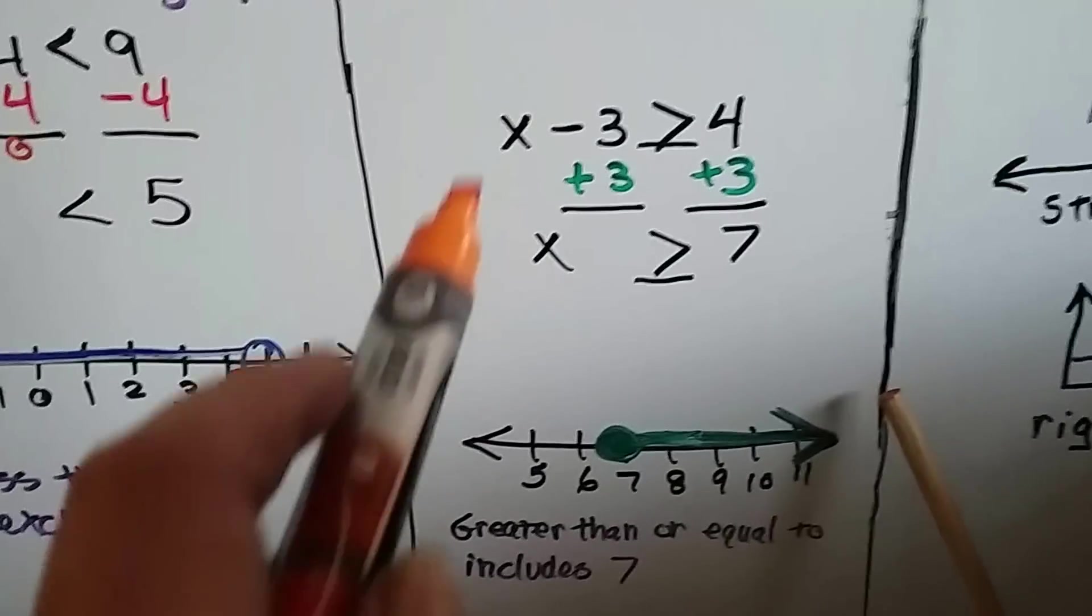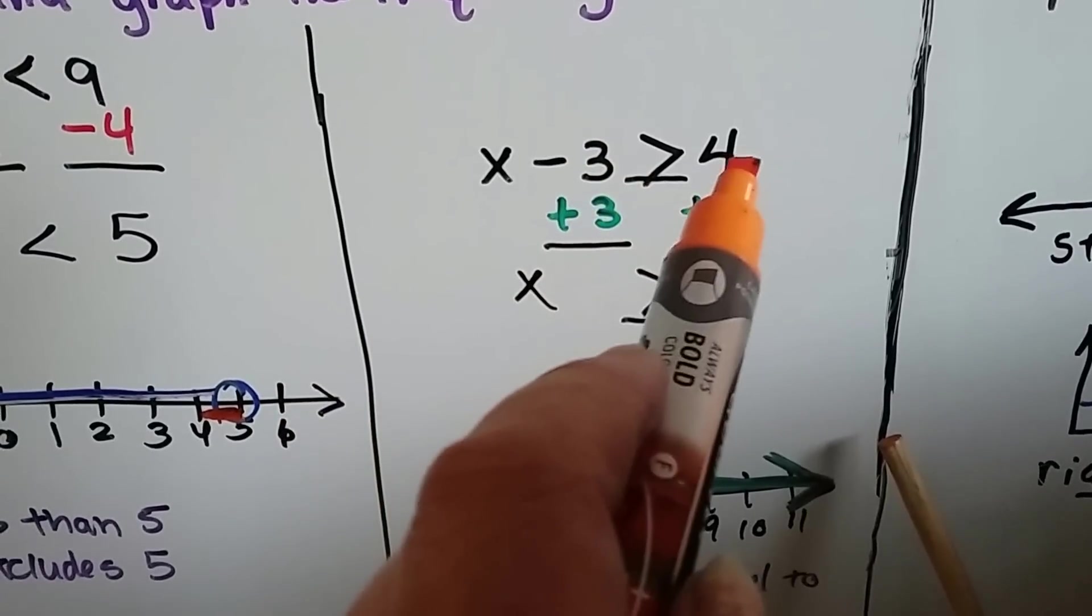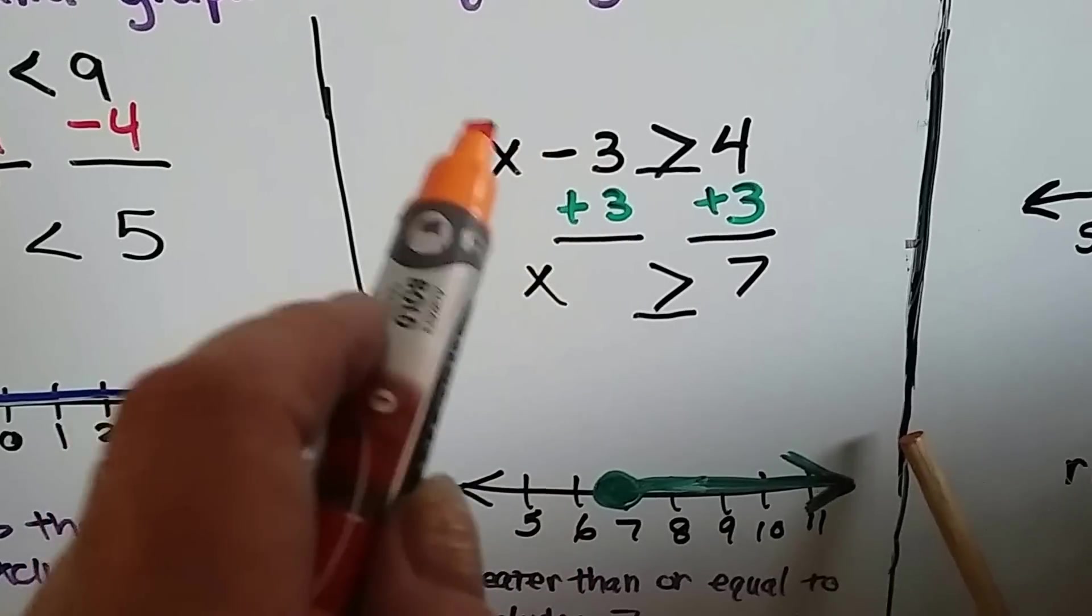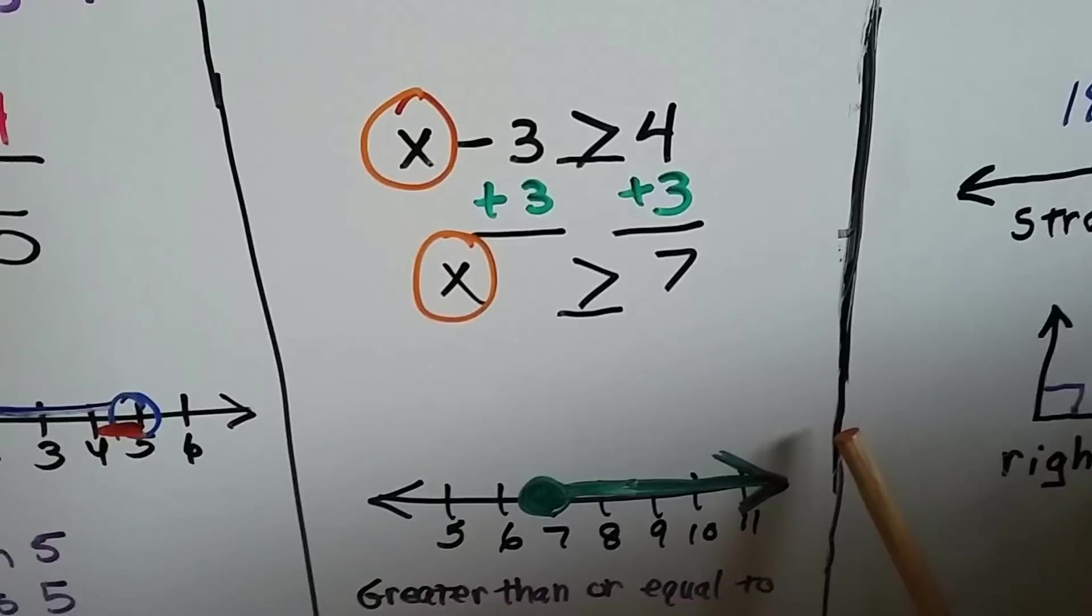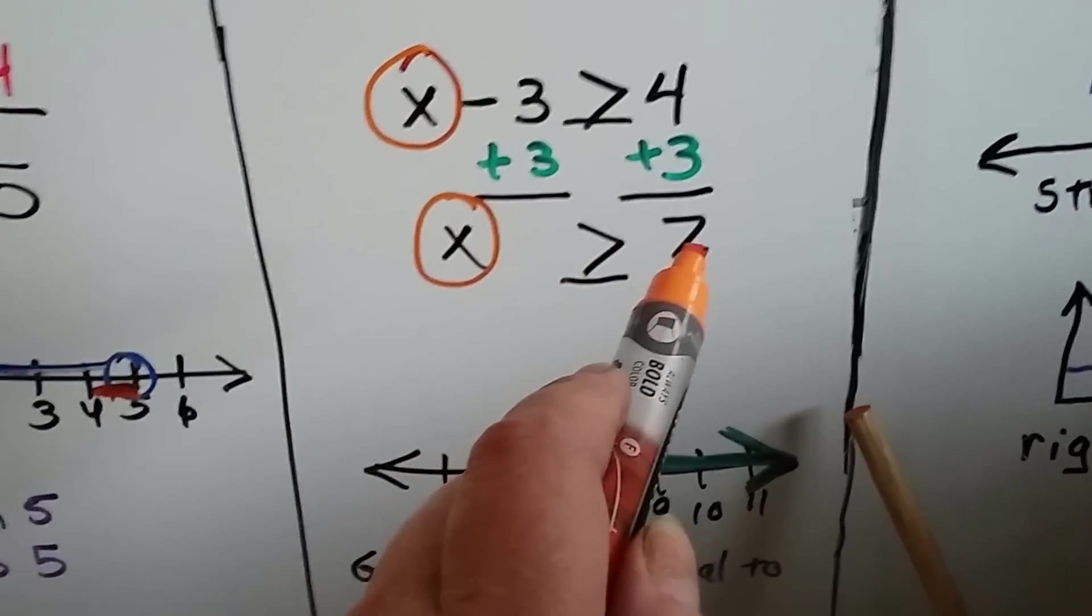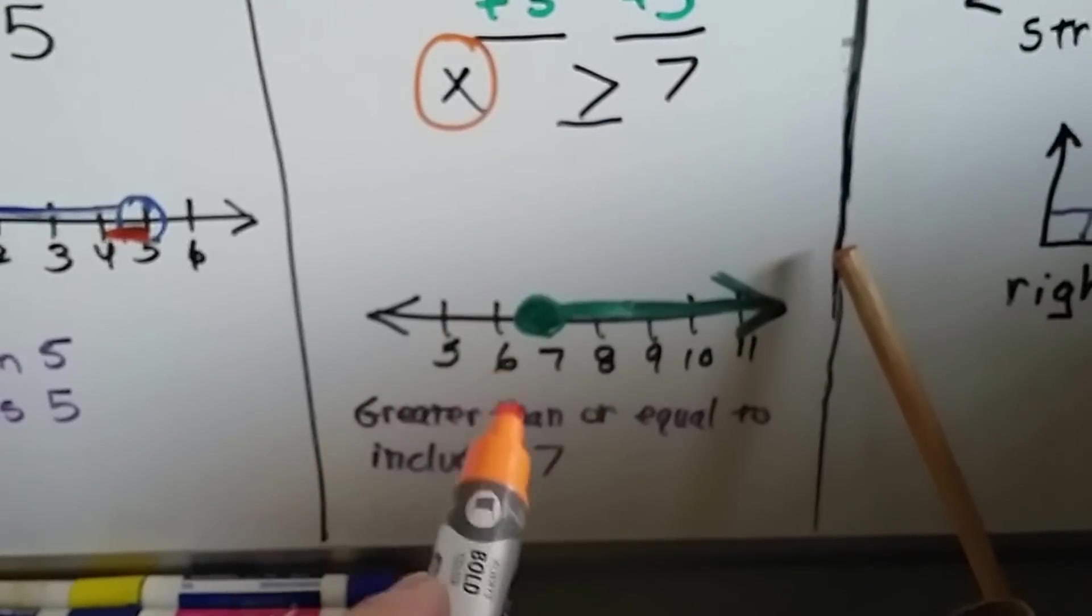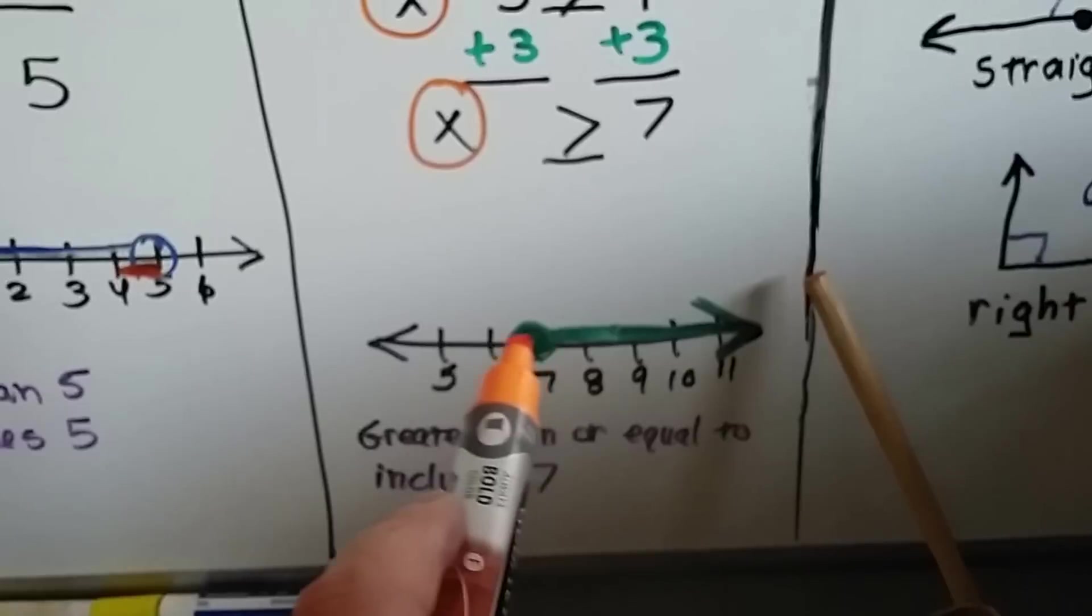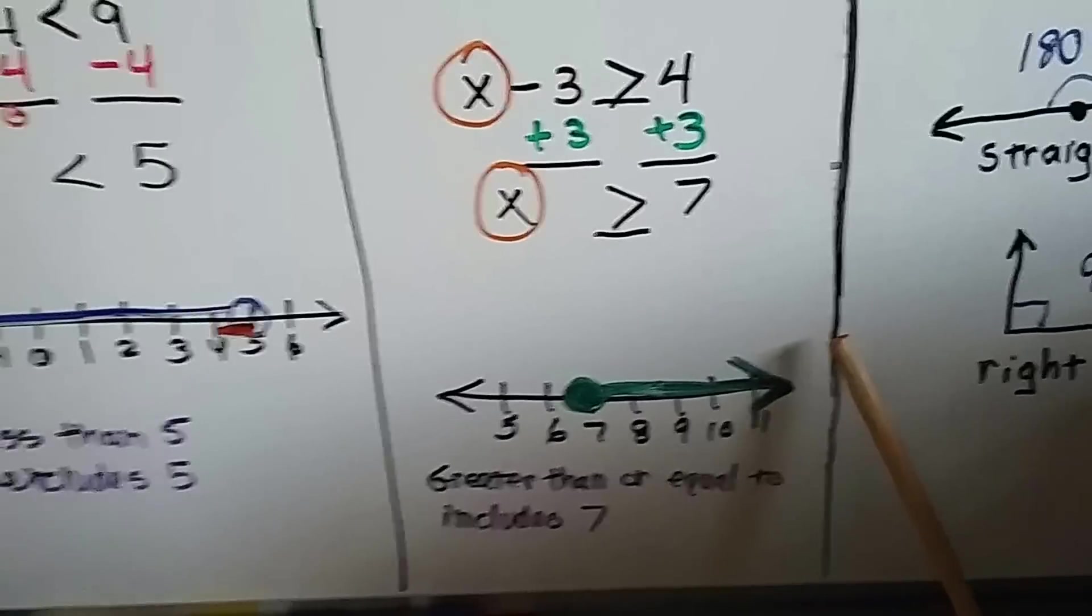Then on this one, it said x minus 3 is greater than or equal to 4. So because it said minus 3, I added 3 to each side and that got the variable to it by itself, because that's our whole goal is getting this variable off to one side by itself. And that left me with x is greater than or equal to 7. Now, because it's or equal to, that means it includes 7. So I filled in the dot on the 7 and made it greater than 7. So it's greater than and equal to 7. So it's a dark dot on the 7 going all the way up.